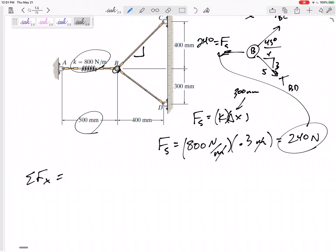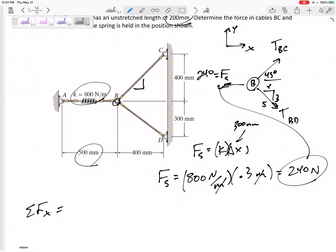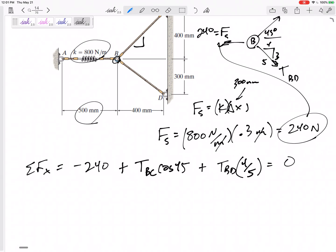Sum of the forces in x equals zero. So what are the forces in the x direction? Well, negative 240, right, negative, pointed to the left right there. And then positive, I don't know the tension, but I do know its angle, and so the cosine 45 degree angle would be in the x direction. And then TBD, the four-fifths component would be in the x direction, and then equals zero. Please, please, please write equals zero so you don't get in trouble with the math or anything. So here is my equation. If that equation had only one unknown, I would solve for that one unknown. This equation has two unknowns, so let me take a step back.